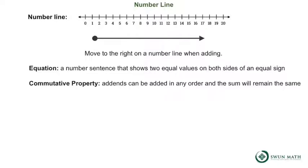Here is an example. 9 plus 3 equals 12, or we can add 3 plus 9 equals 12. They both have a sum of 12.